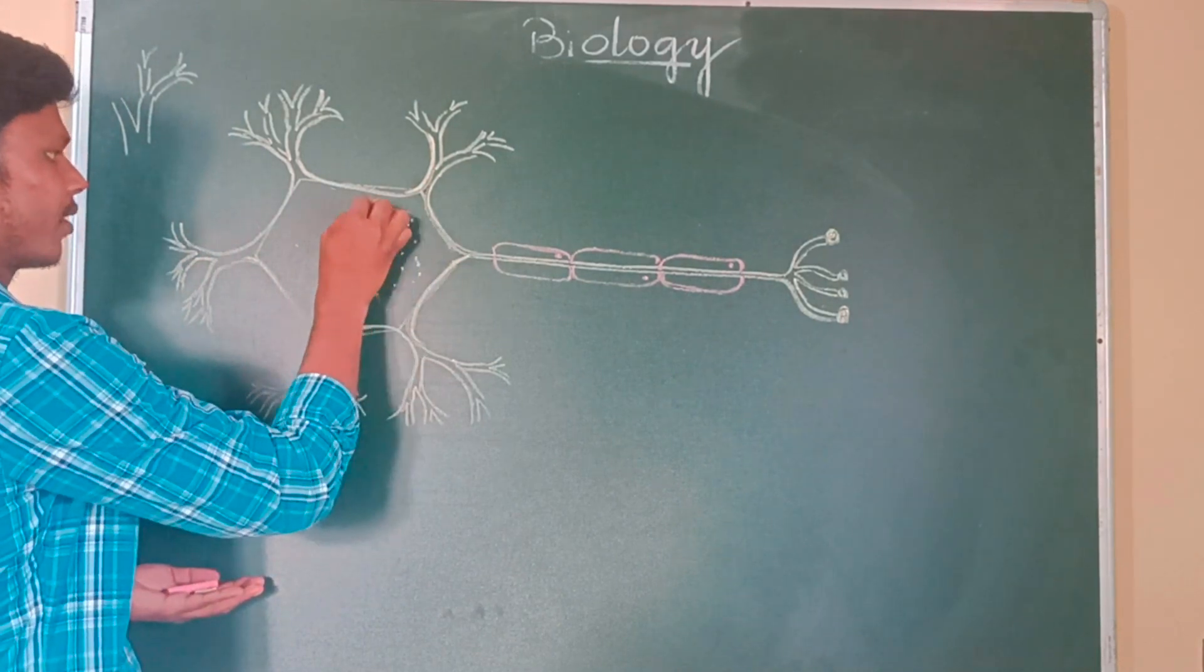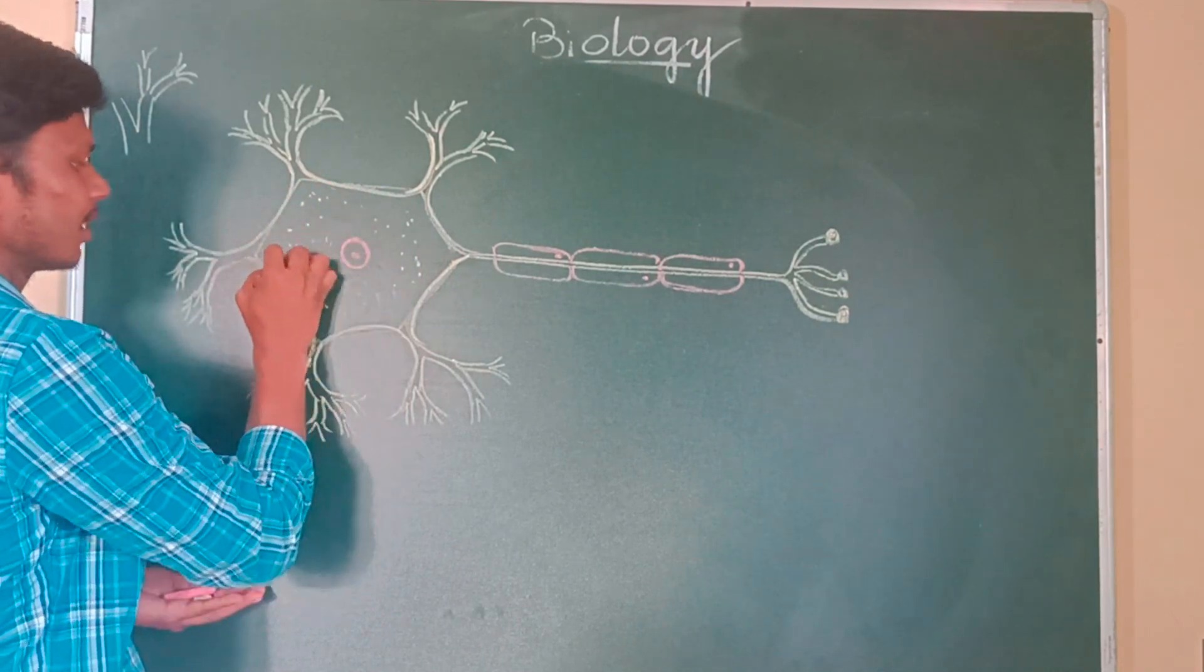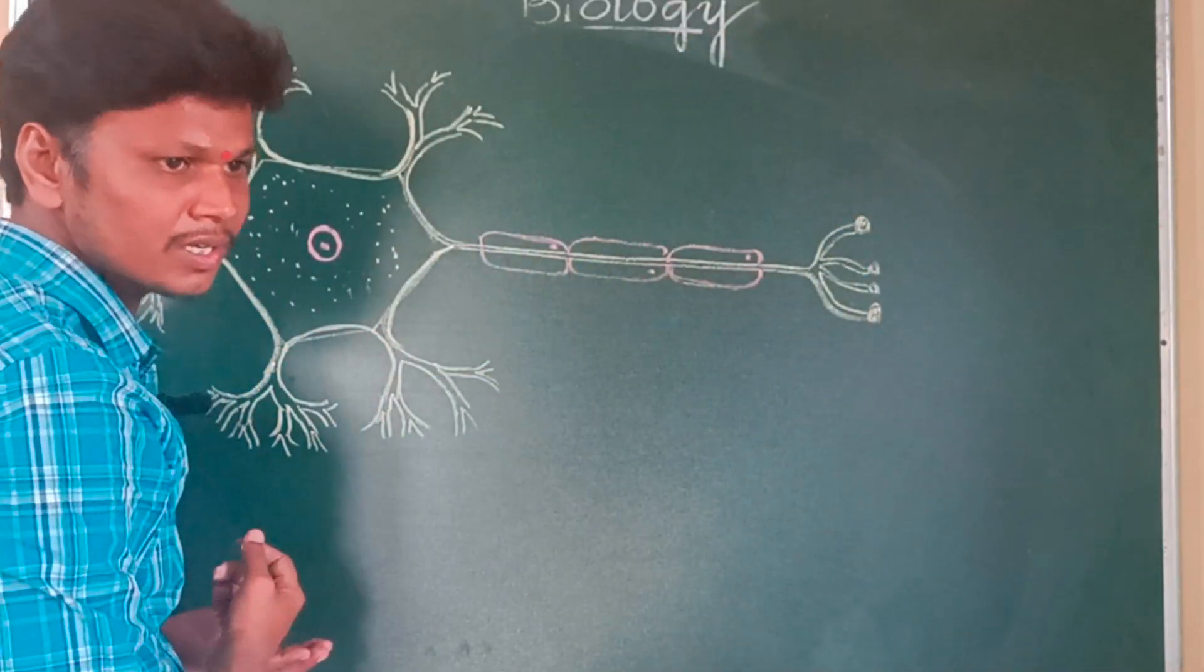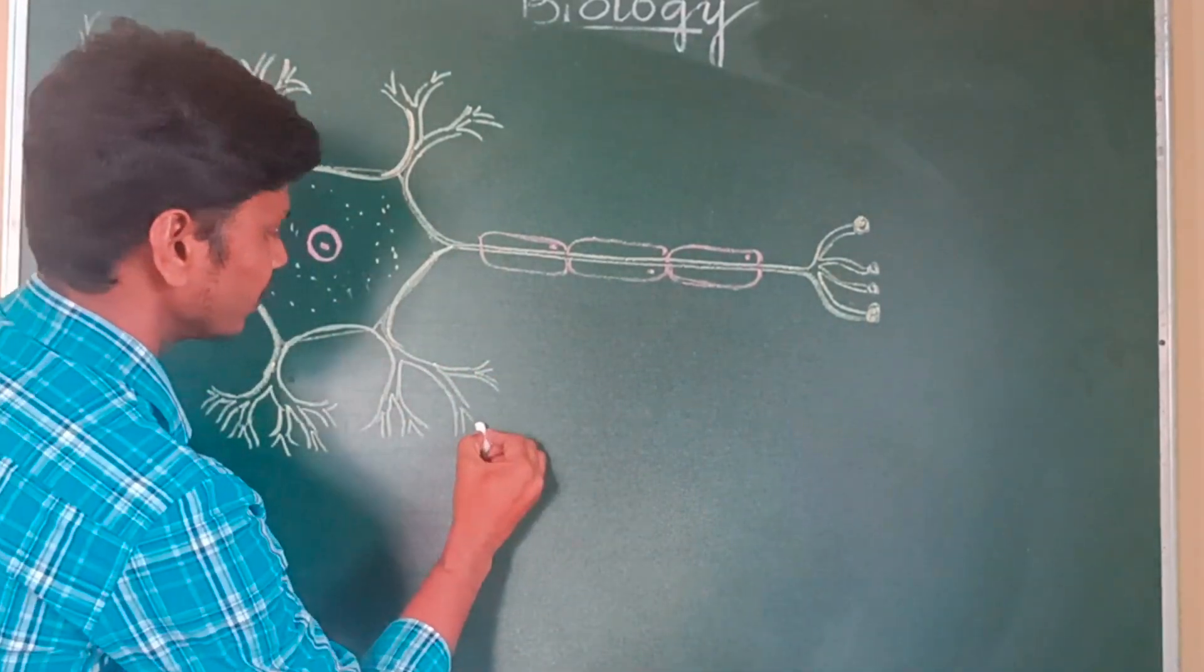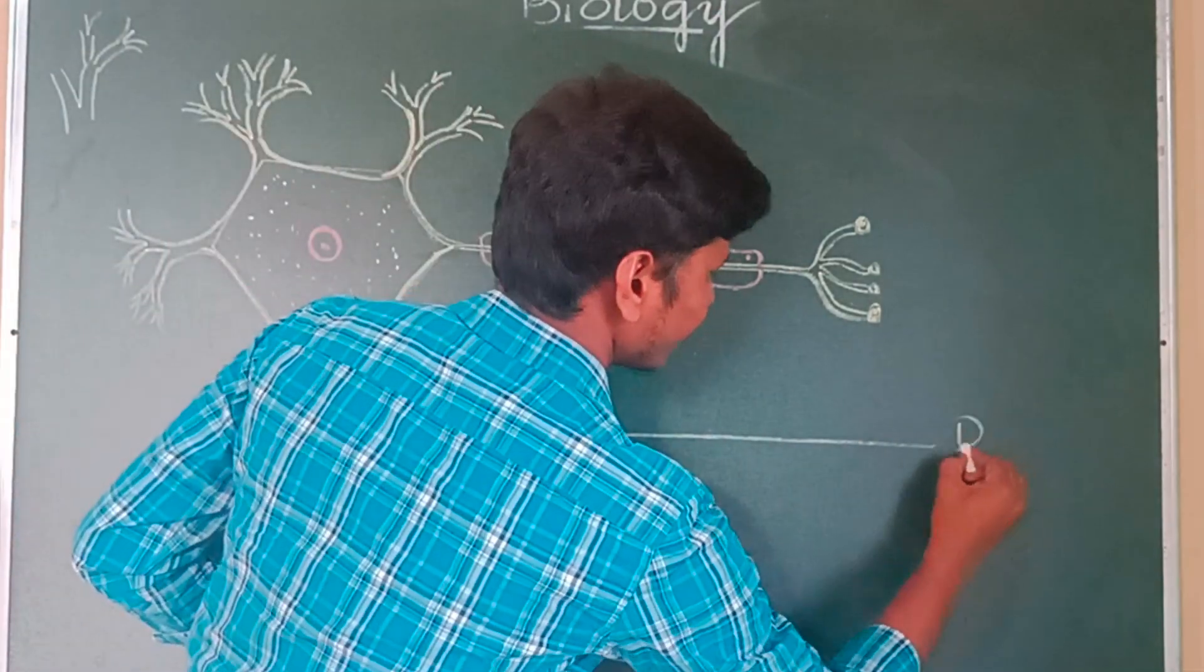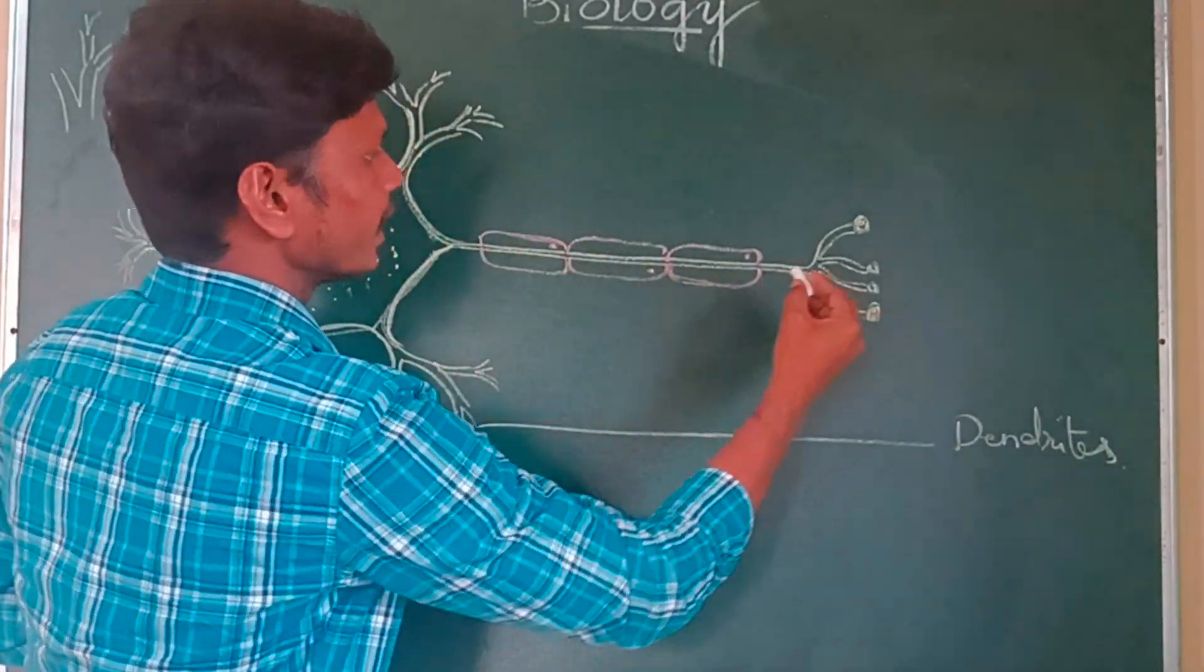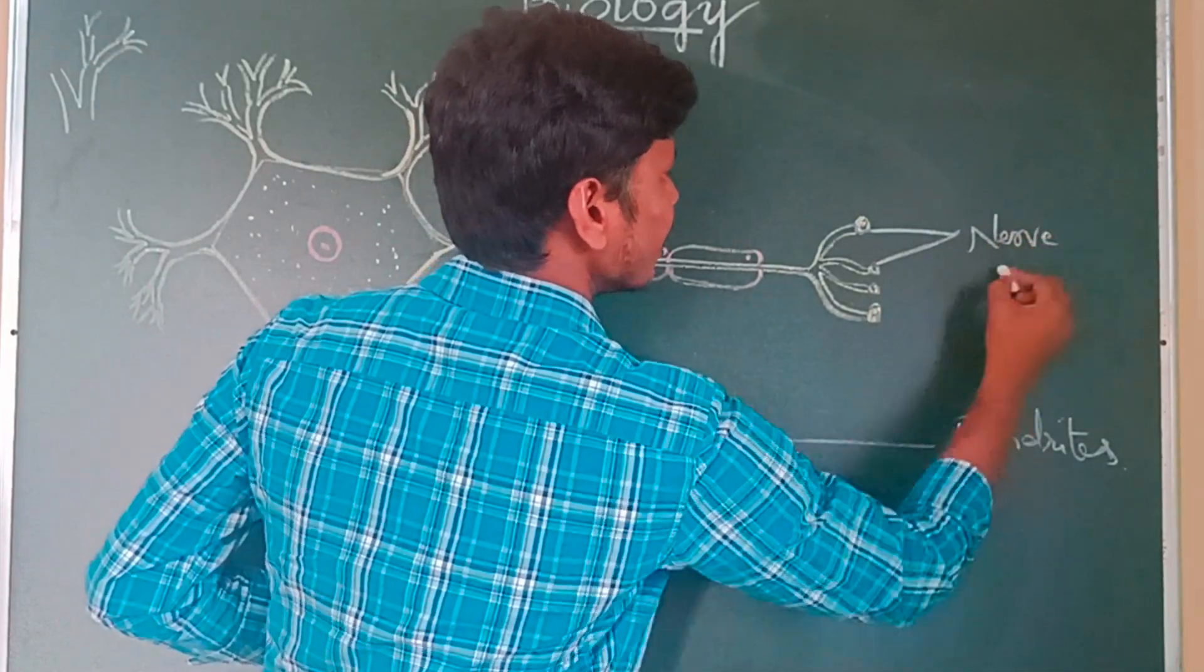Only the thing left out is labeling the parts. You should write the label at the right-hand side of the diagram. Just label the parts one by one. So what is this? Dendrites. Then these are called as nerve ending.